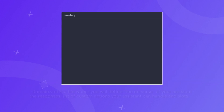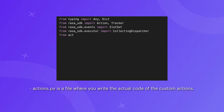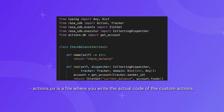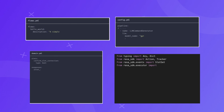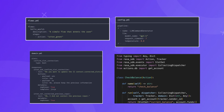domain.yaml is a file where you will define the universe of your assistant — the responses that your assistant will send back to the user, list the custom actions your assistant is able to handle, and what kind of slots and other details your assistant will operate with. actions.py is a file where you will write the actual code of the custom actions, such as calling an API, setting a specific slot, etc. There are also additional files like endpoints.yaml, where you will define how your assistant runs a custom action server in order to execute custom actions.